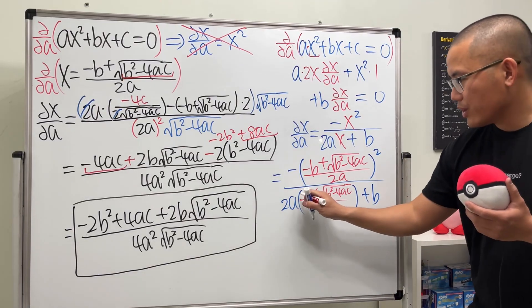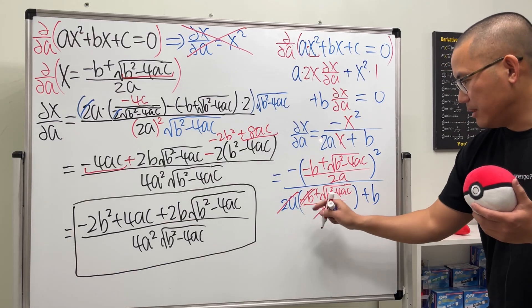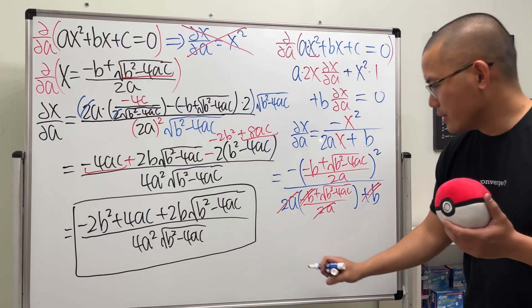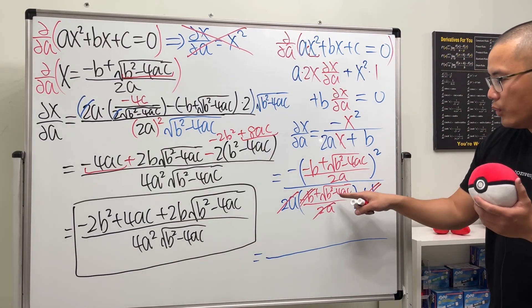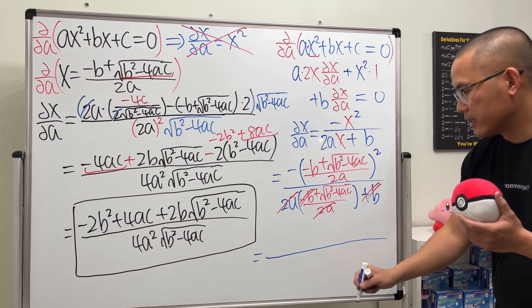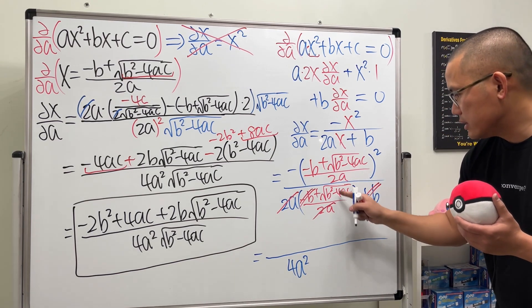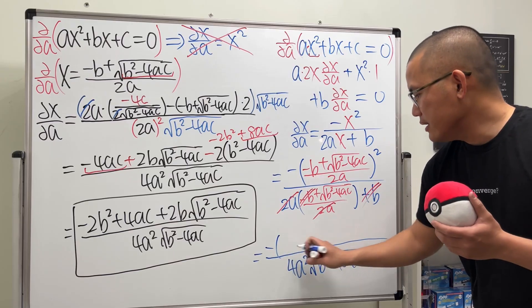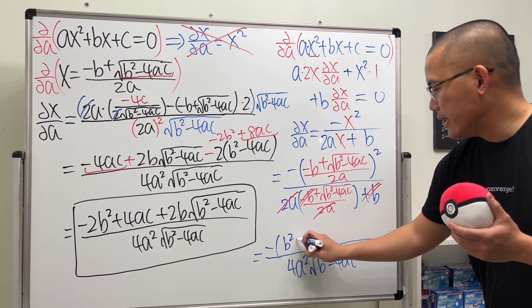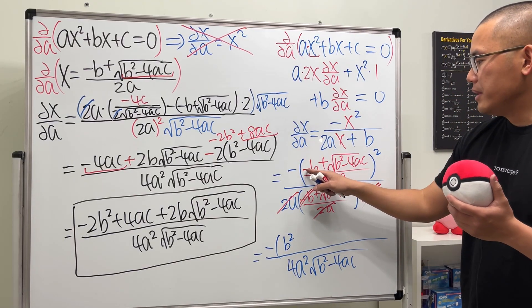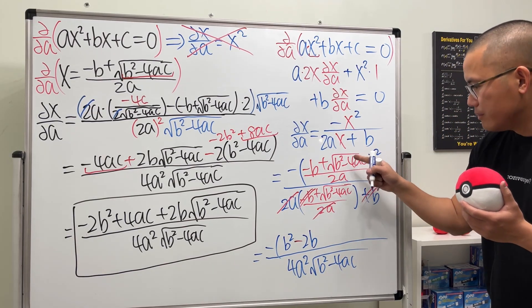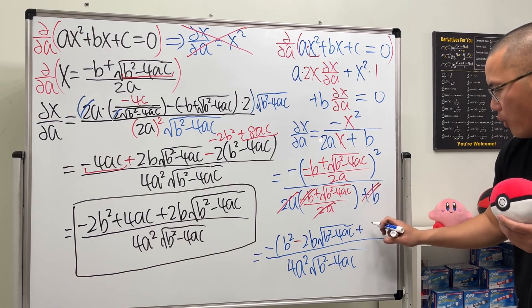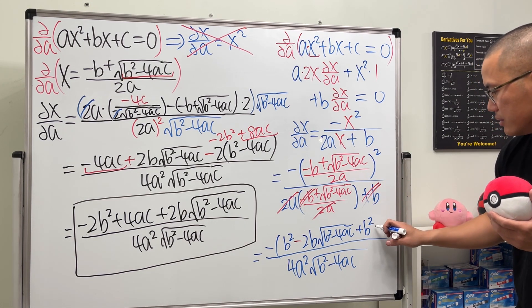Check this out: the 2a's cancel each other nicely. Next, negative b and positive b also cancel. Now we open up the top and put things in order. On the bottom we have 2a squared, times 2a — that's 4a squared — along with the square root of b squared minus 4ac. On the top we put the negative in front, then square negative b to get b squared, then do 2 times b times the square root of b squared minus 4ac with a minus sign, giving minus 2b times the square root of b squared minus 4ac, and finally add the square: b squared minus 4ac.